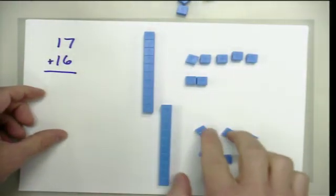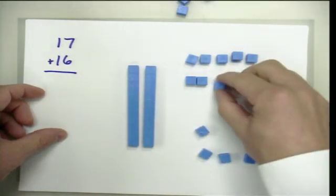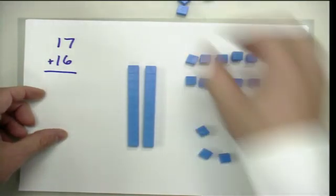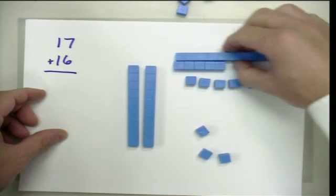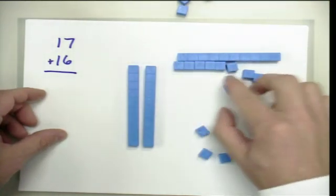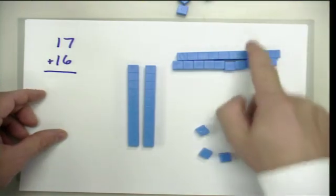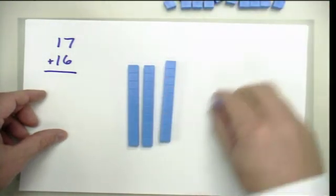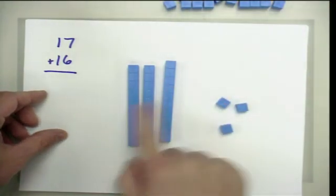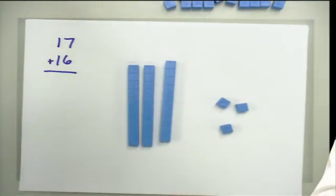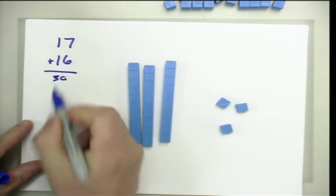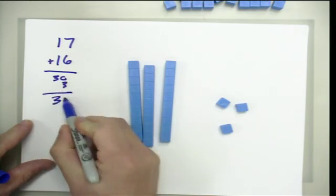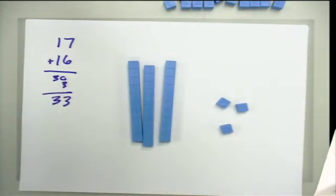Addition is the putting together of these groups, so we're going to put our groups together. We can see we have 2 tens, and as we move our ones together we notice we get a set of 10 ones. We know that we can replace those 10 ones with 1 ten — that's an equivalent trade. So now we see that we have 3 tens and 3 ones. Three tens has a value of 30 and 3 ones, so 17 plus 16 equals 33. That's how students would work on this problem concretely.